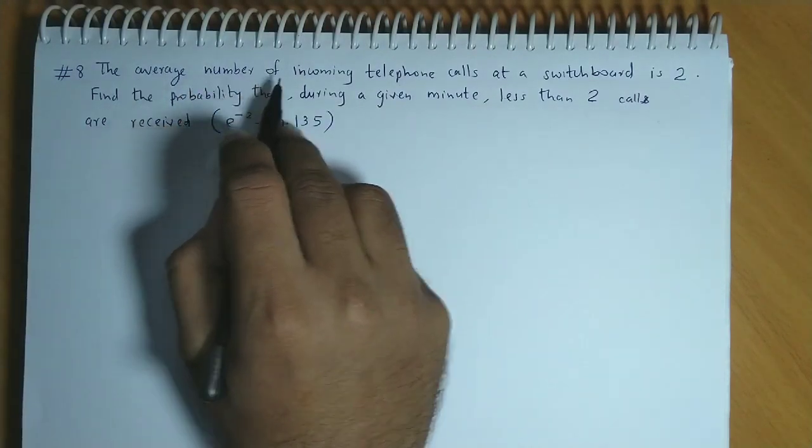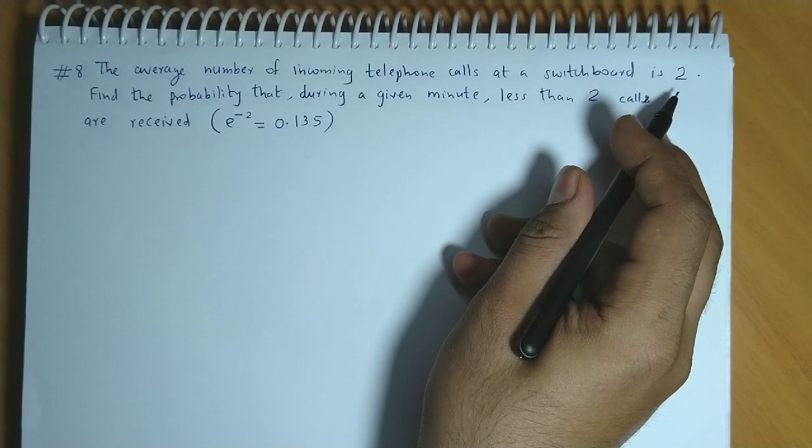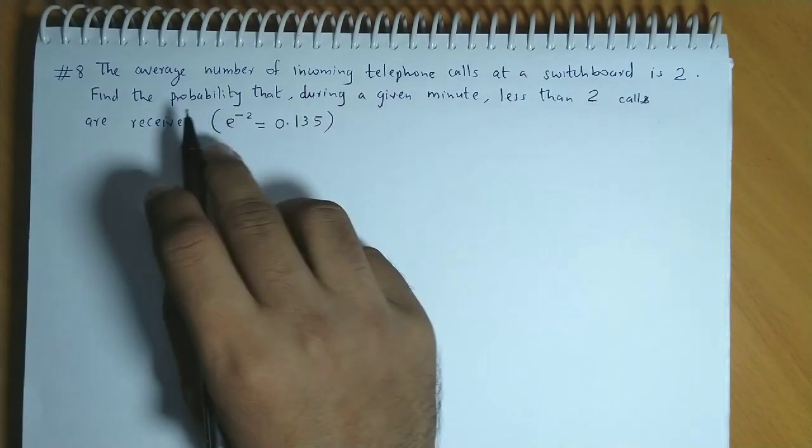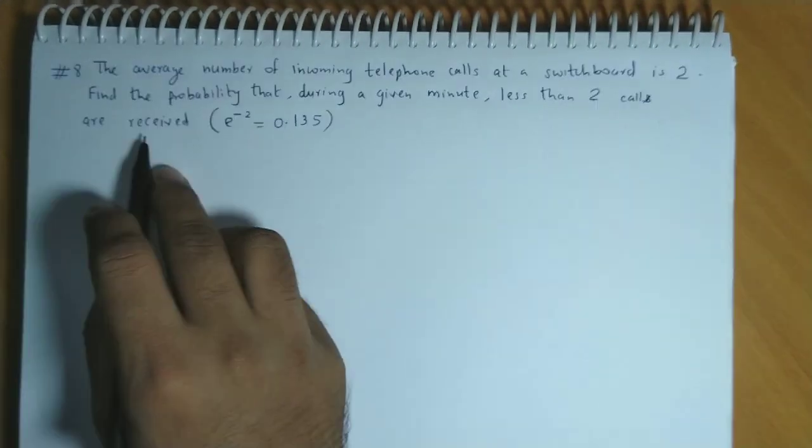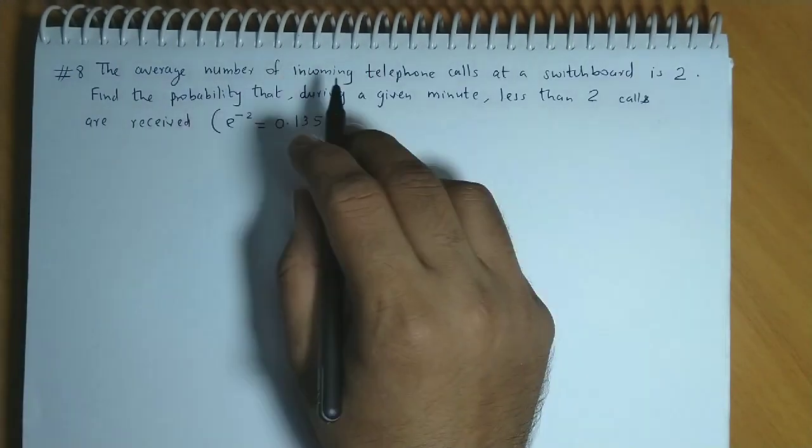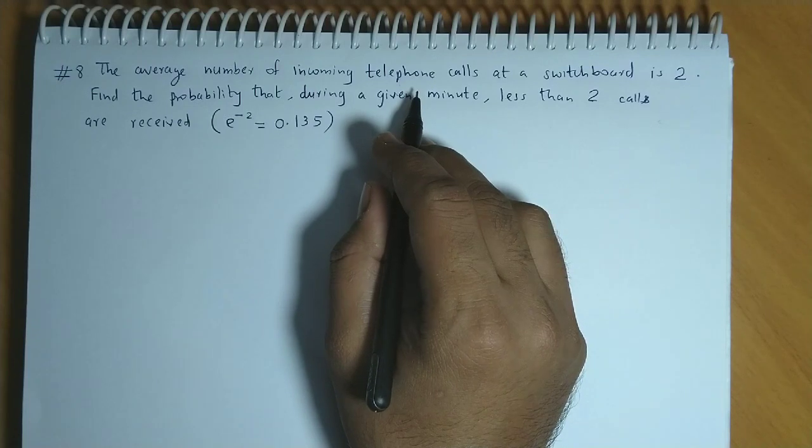The average number of incoming telephone calls at a switchboard is 2. Find the probability that during a given minute, less than 2 calls are received. Now number of incoming calls follow Poisson distribution.